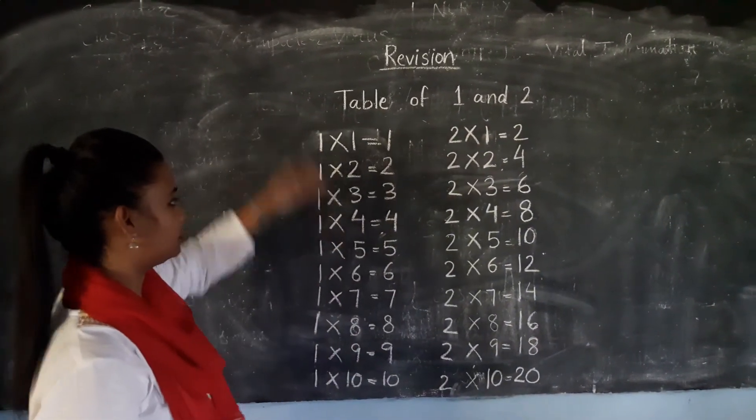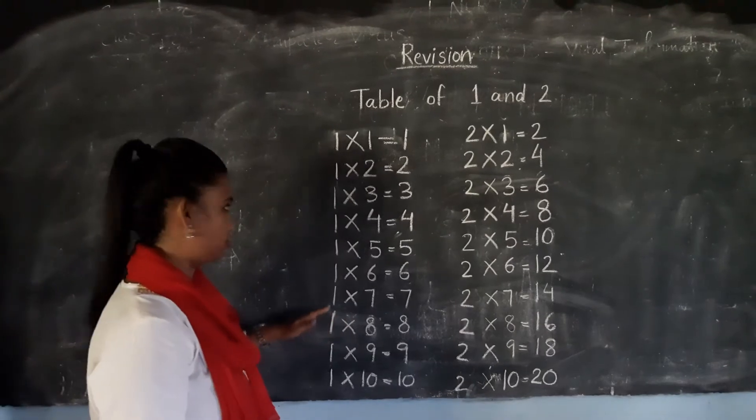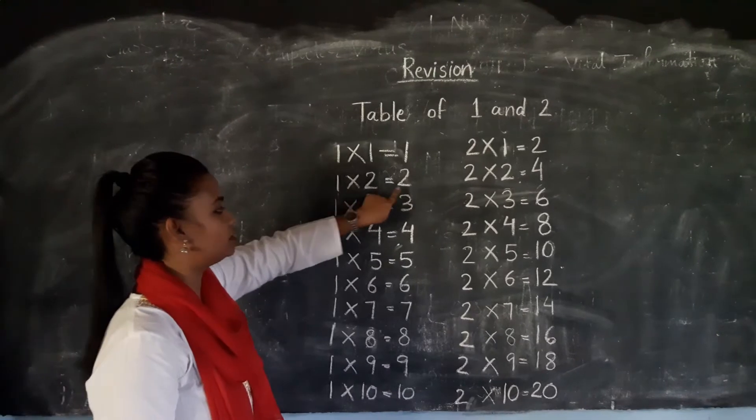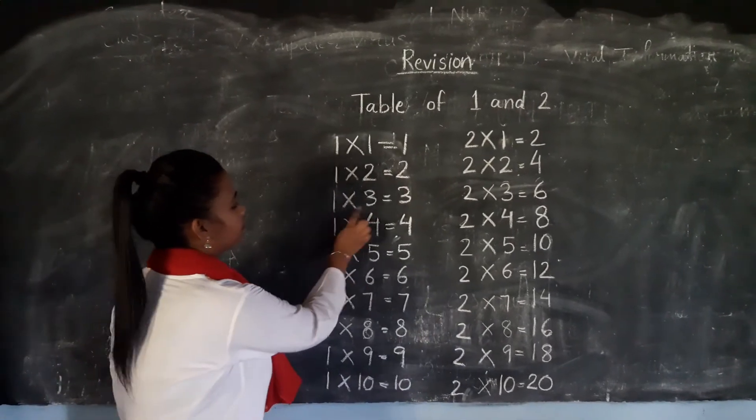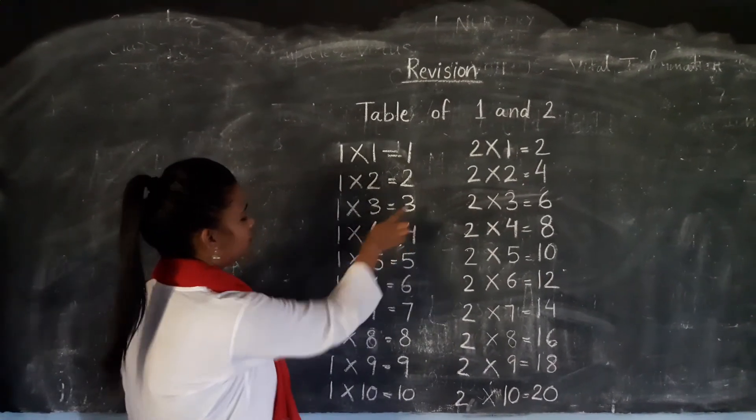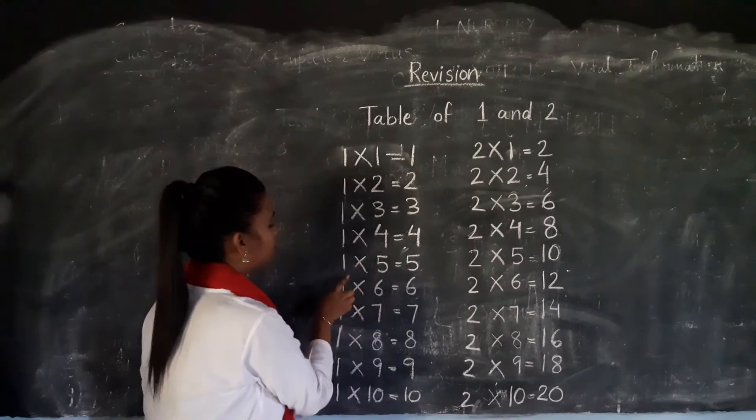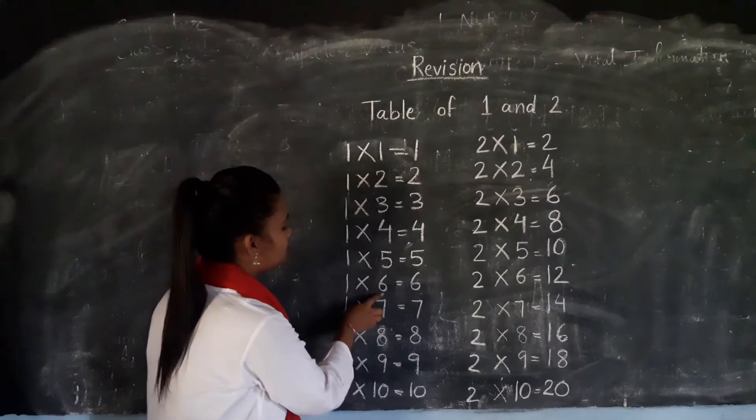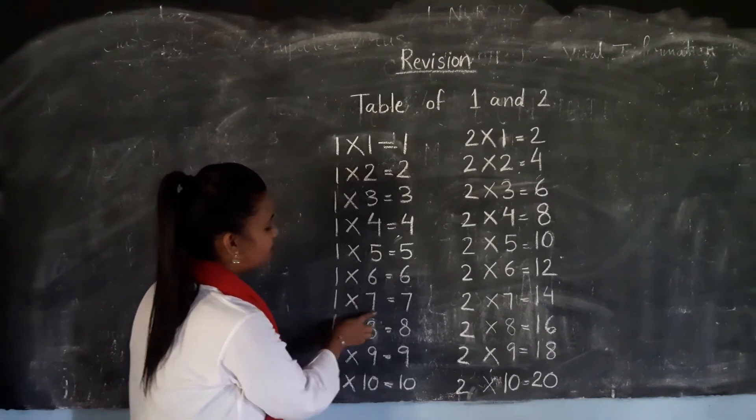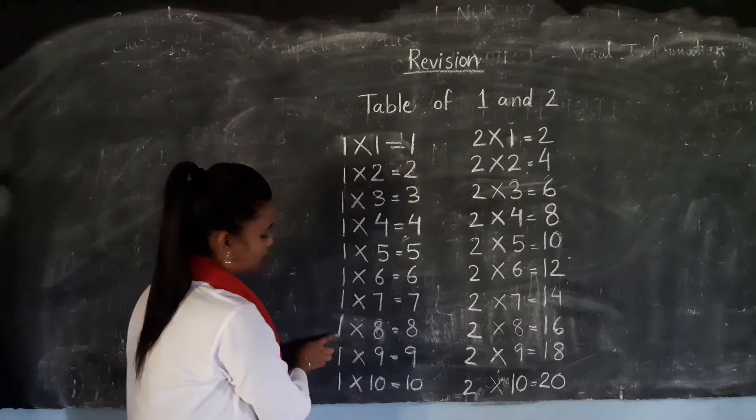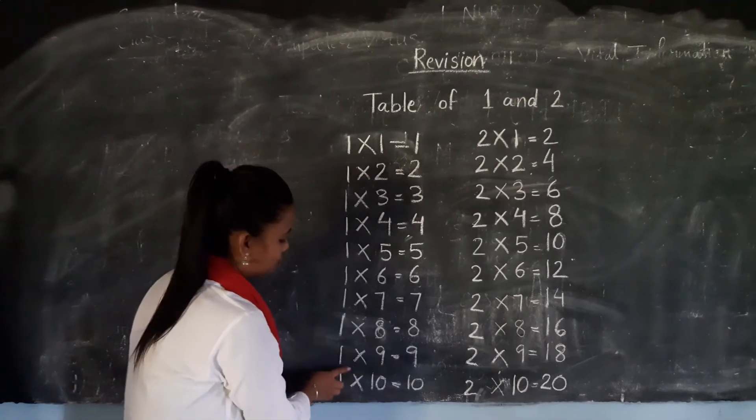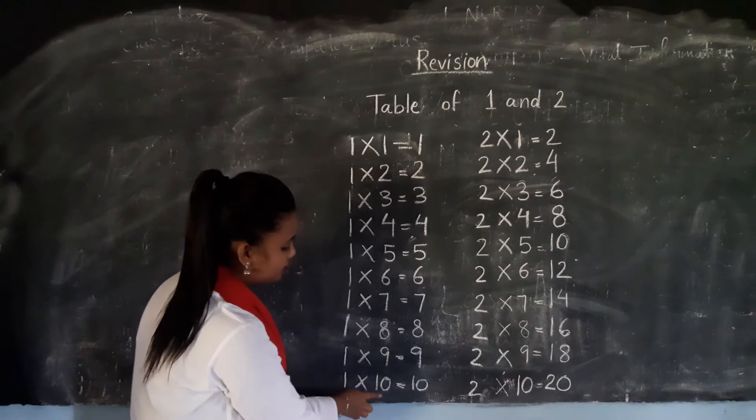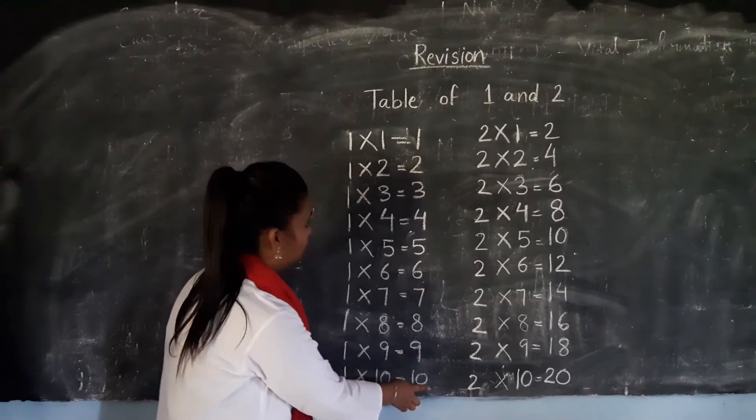So first we will begin with table of 1, alright? 1×1=1, 1×2=2, 1×3=3, 1×4=4, 1×5=5, 1×6=6, 1×7=7, 1×8=8, 1×9=9, and 1×10=10. Okay?